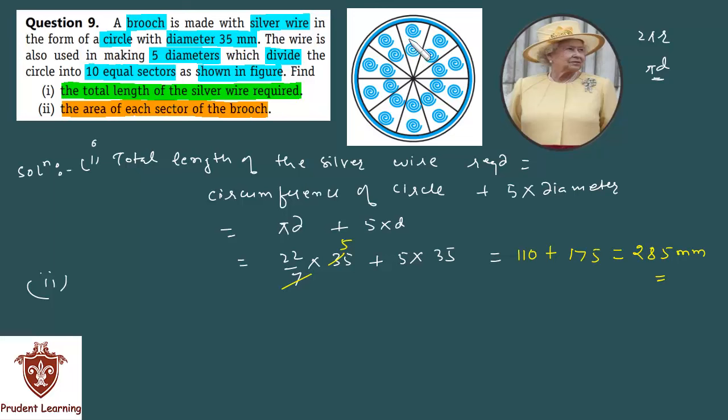I'll show you: this is one sector, first, second, third, fourth, fifth, sixth, seventh, eighth, ninth and tenth. So the 5 diameters divide the entire brooch into 10 equal sectors, and you have to find the area of any one sector, or each sector. So each sector's area will be one-tenth of the total circle's area because there are 10 equal fragments.